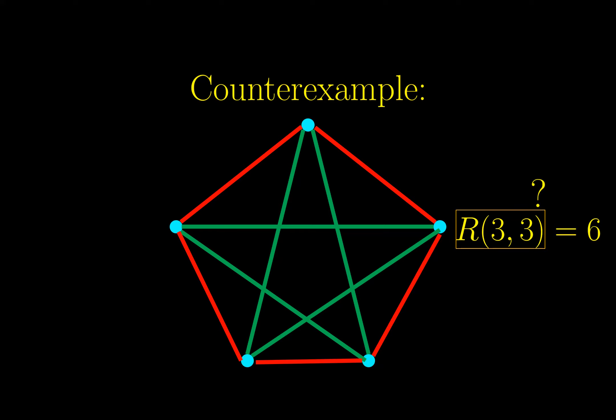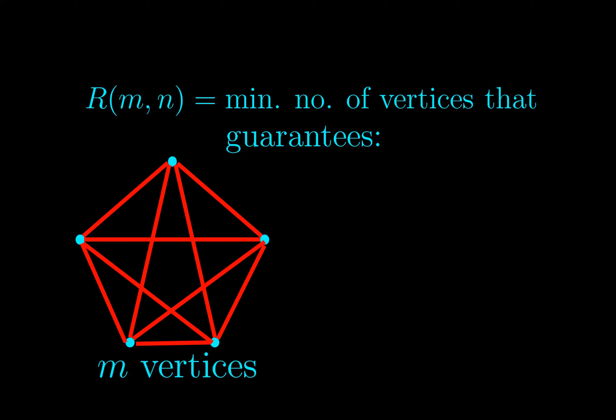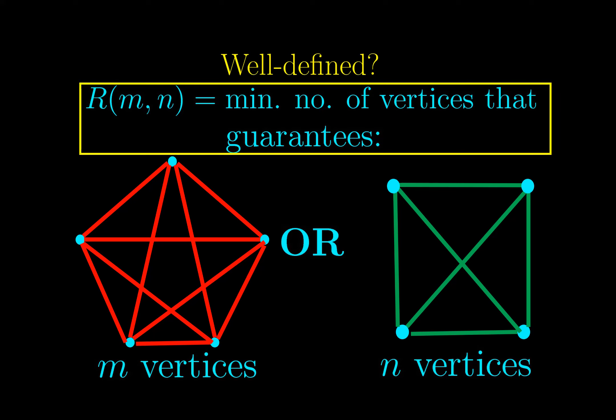R(m,n) is the minimum number of vertices of a graph that guarantees there are m vertices which are all joined by red edges, or n vertices which are all joined by green edges. In mathematics, after you define anything, you should ask yourself whether this is well defined.